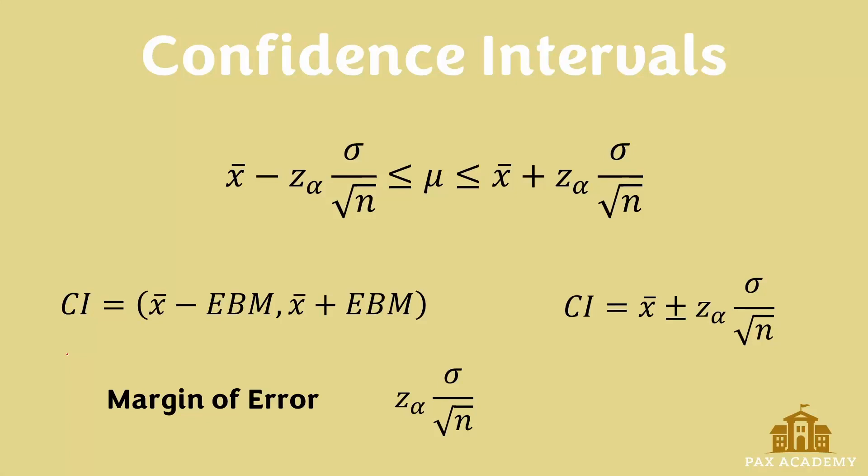Today, let's look at confidence intervals. The main idea behind it is that many times we won't know what the population mean is, and a way to find it or to estimate it is to construct a confidence interval. So essentially the population mean, mu, which is unknown, will be between two values at a certain confidence level.